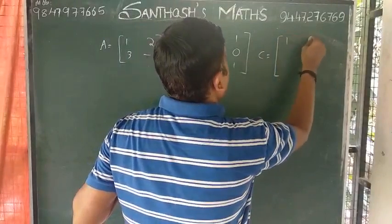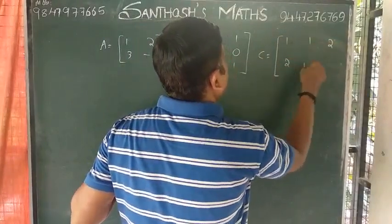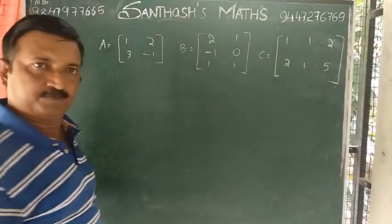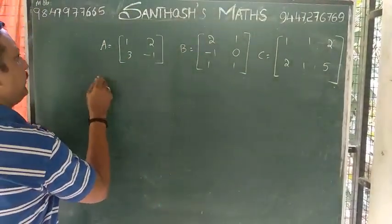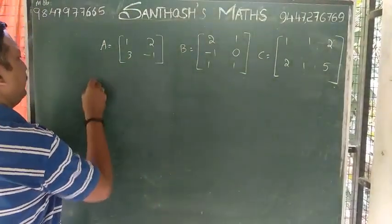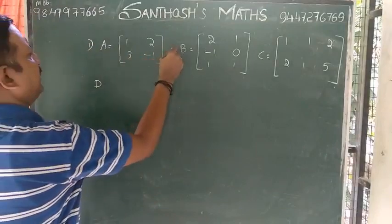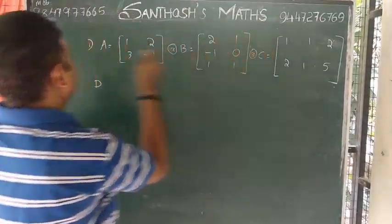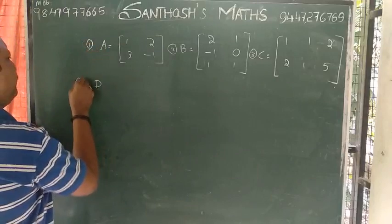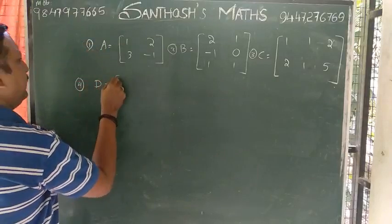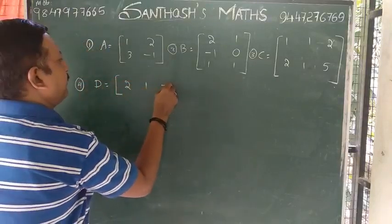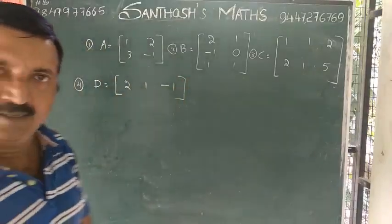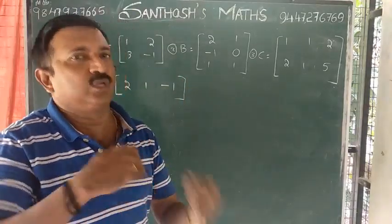Matrix C: 1, 2, 2, 1, 5. This is a matrix. Matrix D: 1, 2, 1, 4. And another matrix D: 2, 1, minus 1. This is a matrix. All elements are equal to the code.